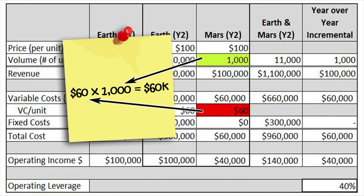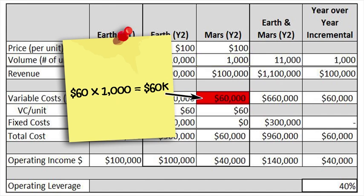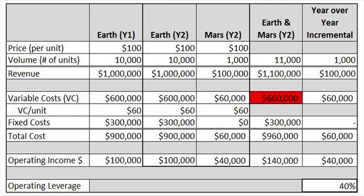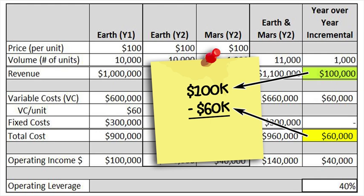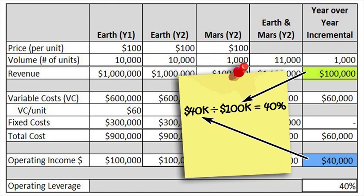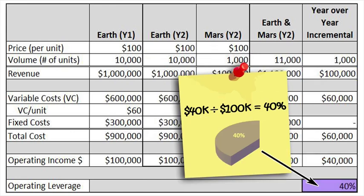Let's check. Variable cost per unit remains at $60 per unit, setting the total variable cost of the Mars products at $60,000, and increasing the total cost for year 2 to $660,000. No additional investments were required, therefore no additional fixed costs. So yes, incremental sales to Mars of $100,000, less $60,000 in variable costs with no additional fixed costs, produces $40,000 incremental operating income. The ratio of operating income dollars to revenue equals 40% operating leverage.